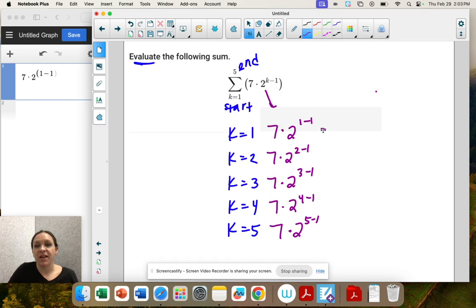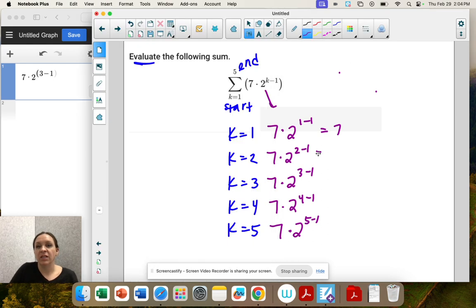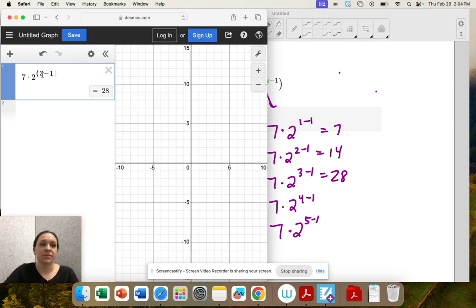So this is 7 and then every time I change it we're going to multiply by 2. So 14, 28, 56, and 112.